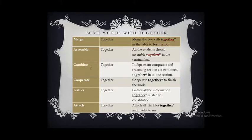'Combine' means joining all things together, so we should not use 'together' with it. For example: 'In the IBPS exam, computers and reasoning sections are combined into one section' — 'together' should be removed. 'Cooperate' means working jointly, so 'together' should be removed. 'Gather' means collecting all things together, so 'together' should be removed.